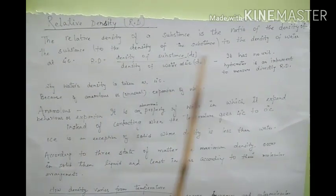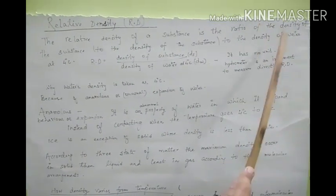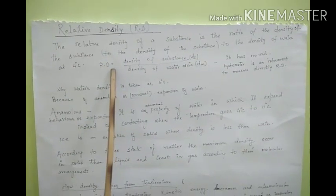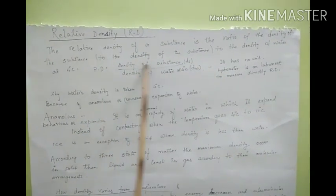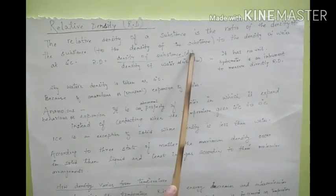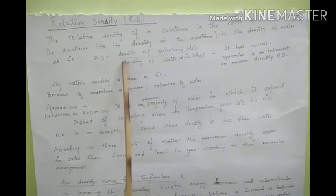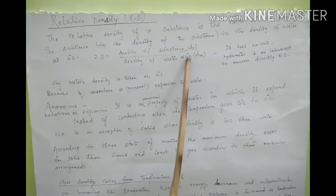That means it is a comparison of the density of a substance to the density of water. Relative density can be written as density of the substance, that is solid substance, and density of water at 4 degrees.